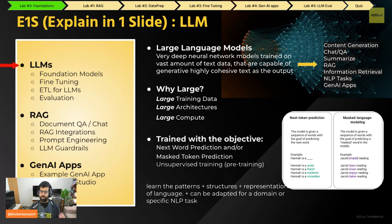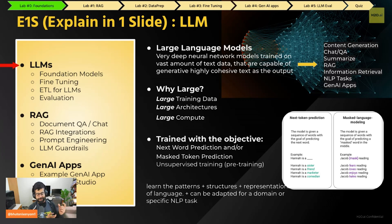LLMs are always trained with the objective of next token prediction, and that is the only thing they care about. At a very simple level, they're a very powerful iPhone auto-suggest — when you're typing on your phone and you see the next word come up, just think of that trained on the entire internet across thousands of GPUs. Simply put, that's an LLM.